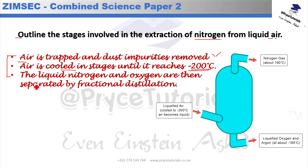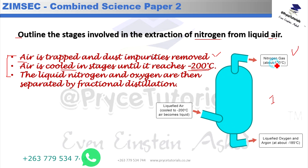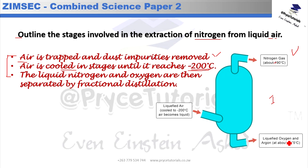The liquid nitrogen and oxygen are then separated by fractional distillation. Looking at this model diagram of the fractionating column, the liquefied air enters the column and is slightly heated. Nitrogen boils off at minus 196 degrees Celsius and exits as a gas, while oxygen is tapped off as a liquid at a different temperature.